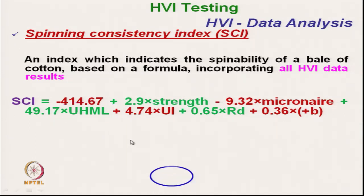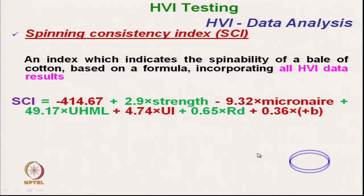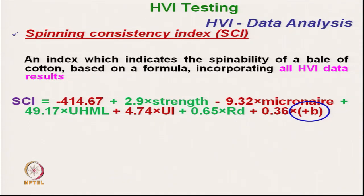Uniformity index also has a positive impact — we need a higher uniformity index — along with Rd value and UHML value. The instrument automatically records all data and calculates the Spinning Consistency Index, indicating the spinnability of the fibre.